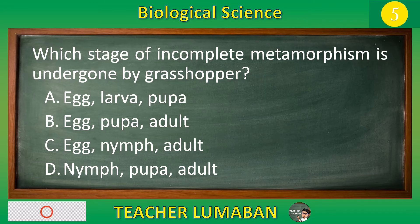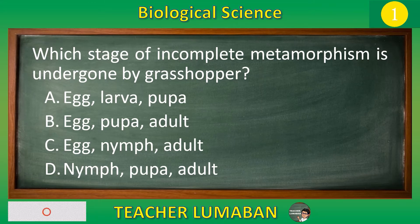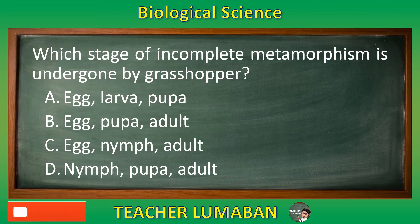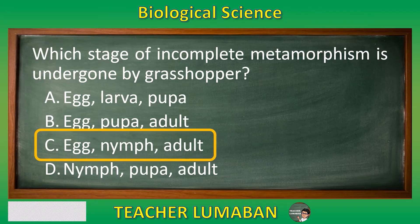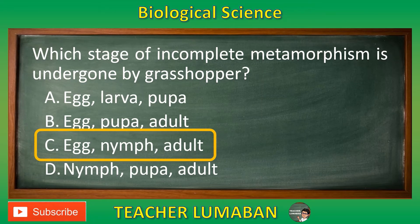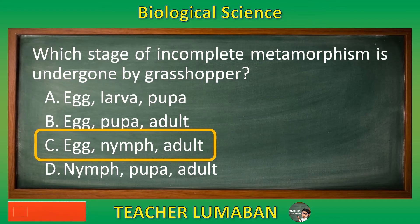5, 4, 3, 2, 1. The correct answer is Letter C: Egg, Nymph, Adult. The stage of incomplete metamorphosis undergone by the grasshopper is Egg, Nymph, Adult.